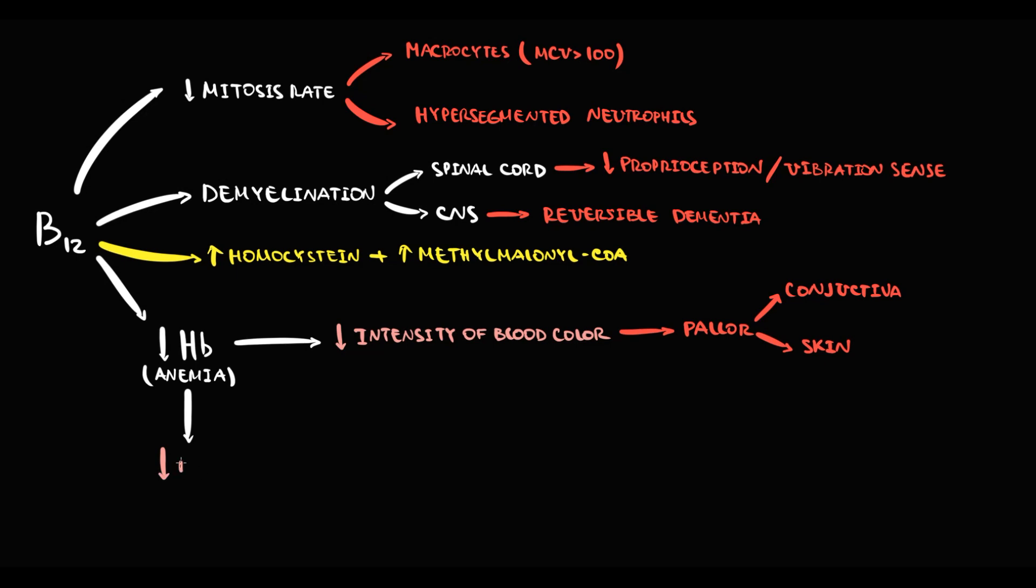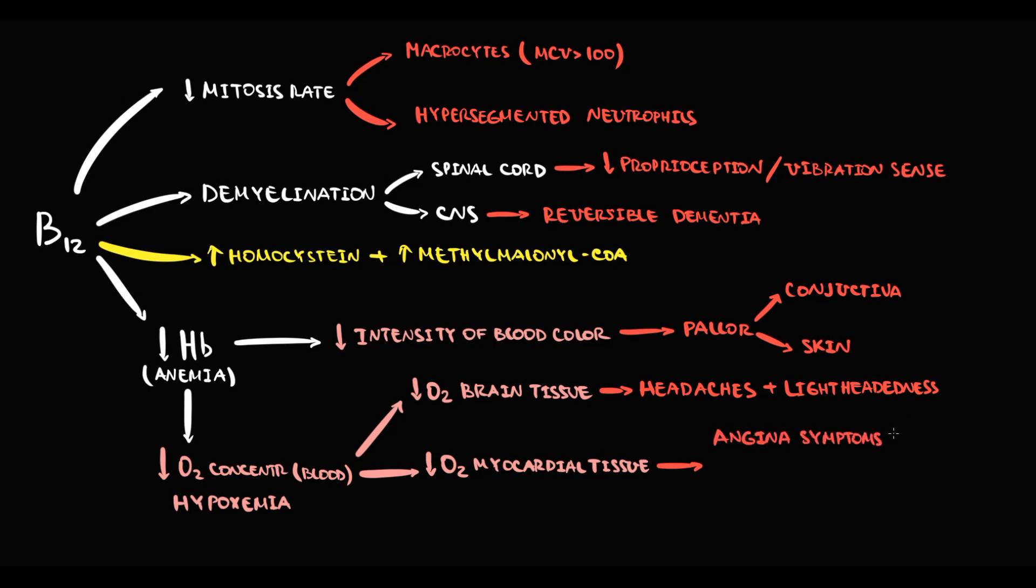Also with decreasing hemoglobin, the amount of oxygen in the blood decreases, so a condition known as hypoxemia develops. Decreasing oxygen delivery to the brain causes hypoxia of the brain tissue that results in symptoms as headache and lightheadedness. Decreasing oxygen delivery to myocardial tissue causes myocardial ischemia, especially with pre-existing coronary artery disease. And myocardial ischemia causes angina symptoms, as retrosternal pain for example. And also most commonly it manifests as shortness of breath initially with physical exercises and then even at rest.